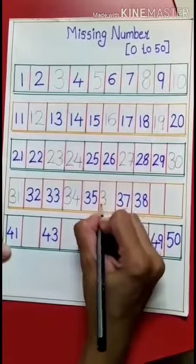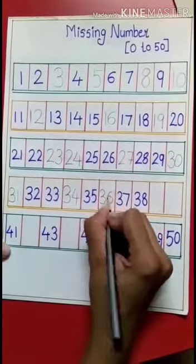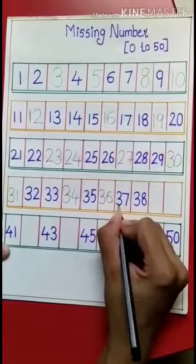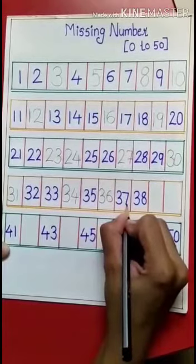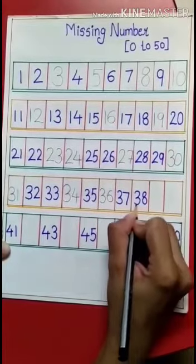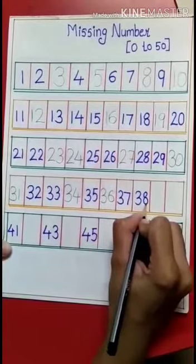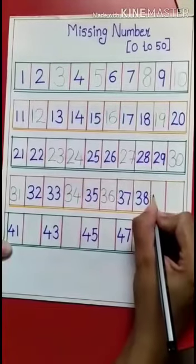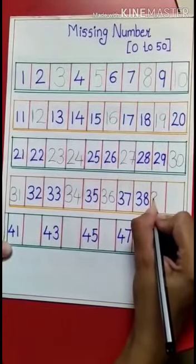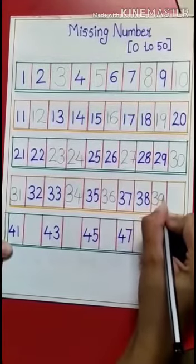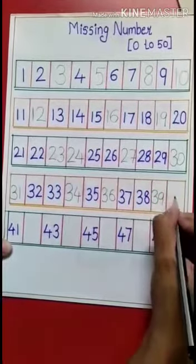After 34, 34, 35, 35. Tell me children, what comes after 35, 35? Yes, it's 36, 36. 37, 37.